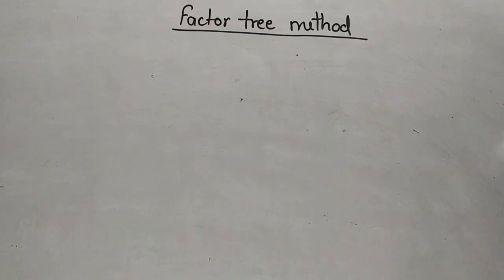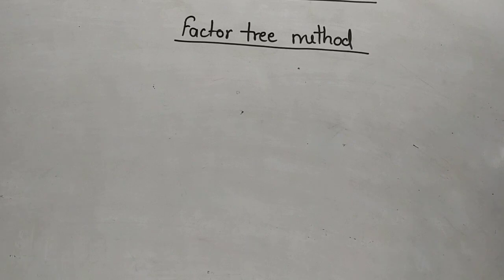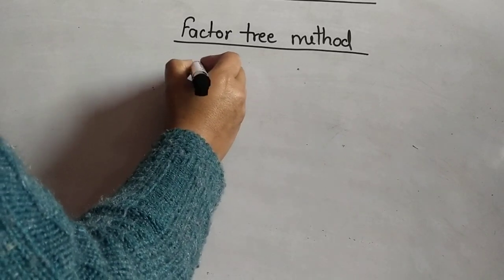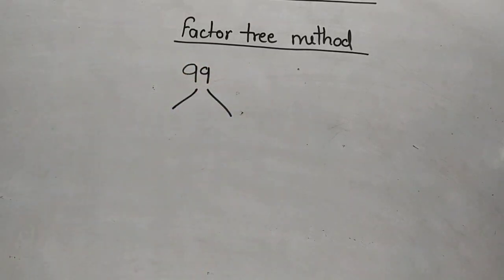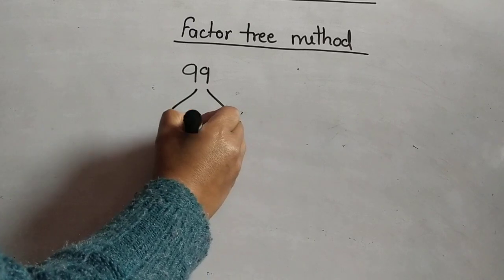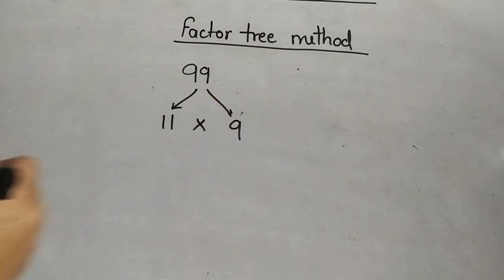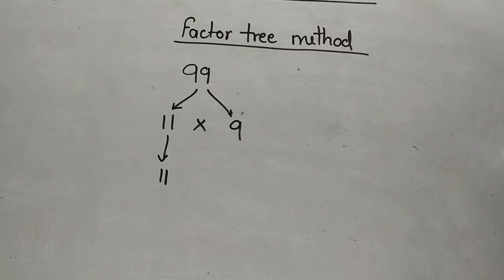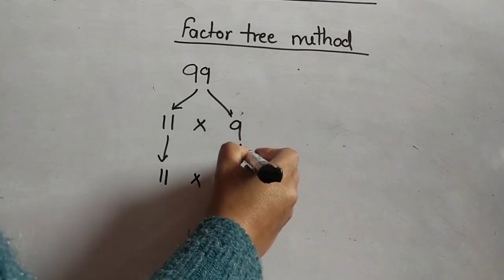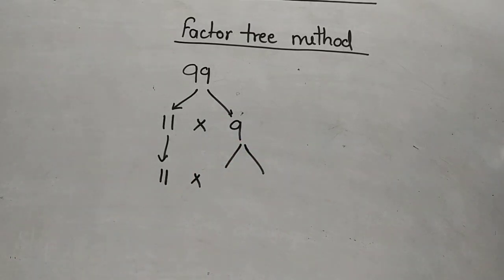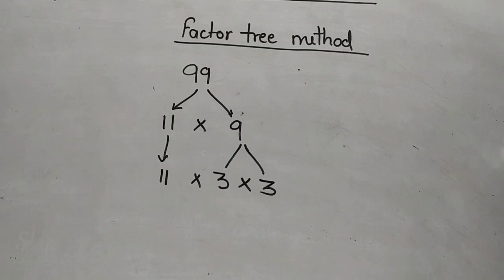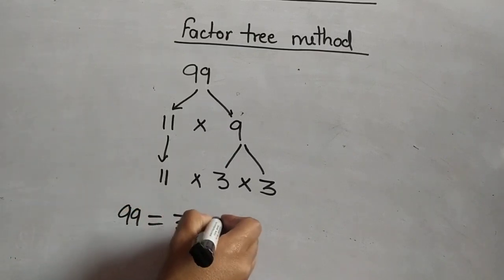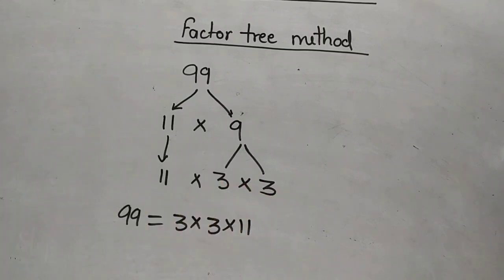Let us take one more example: the number 99. We can write 99 as 11 × 9. Since 11 is a prime number, we leave it. Then we break 9 into its factors: 9 = 3 × 3. So the prime factors of 99 are 3 × 3 × 11.